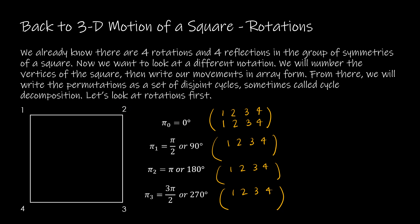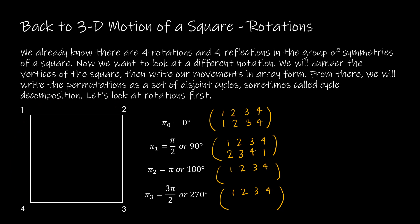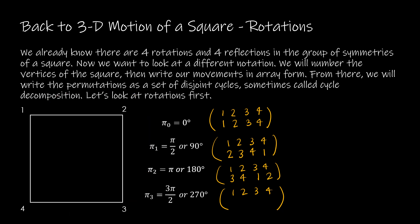If I go 90 degrees clockwise, 1 would map to 2 — so 1 is going to go to where 2 is currently. 2 is going to go to where 3 is currently, 3 to where 4 is, and 4 to where 1 is. For 180 degrees, 1 maps to 3, 2 goes to 4, 3 goes to 1, and 4 goes to 2. For 270 degrees, 1 goes to 4, 2 goes to 1, 3 goes to 2, and 4 goes to 3.